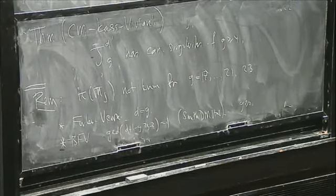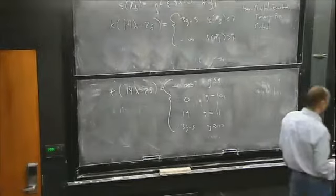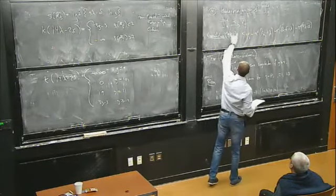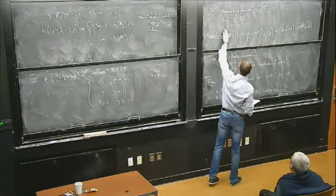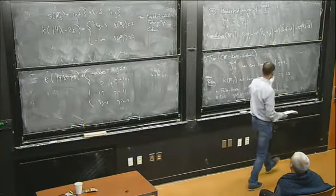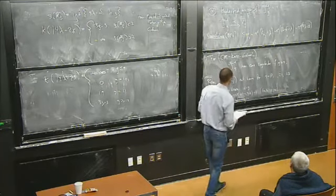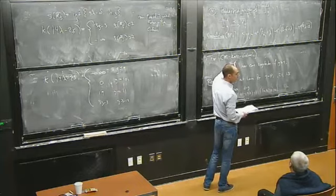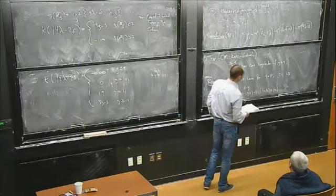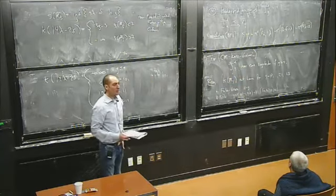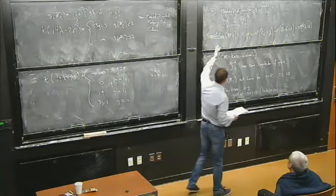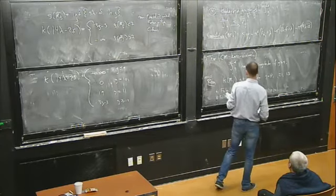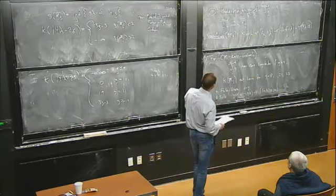There are results of Iitaka and Kawamata that tell you: if you know M_g-bar is of general type, you can immediately say that the Kodaira dimension of J-bar_{D,g} will be maximal, 3g minus 3. So in all cases where the Kodaira dimension of M_g-bar is big, you get this for free. One of the things you get from this is that it does not depend on D — it just depends on g. And you might wonder if that's true because all of these spaces are parameterizing Jacobians of some degree. But in fact these spaces are not in general birational.